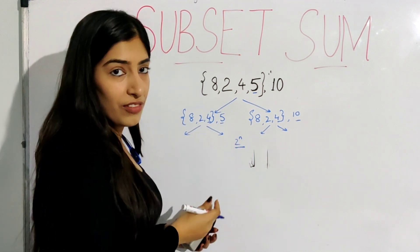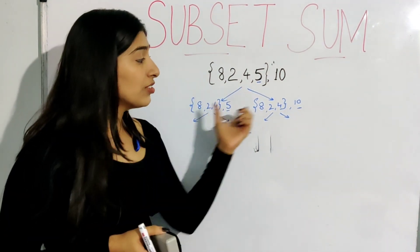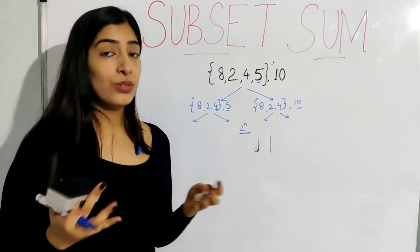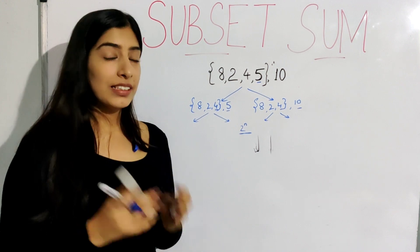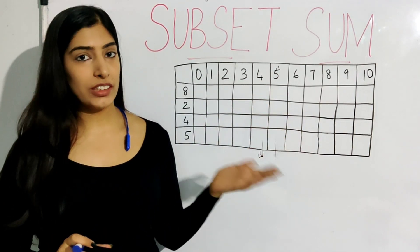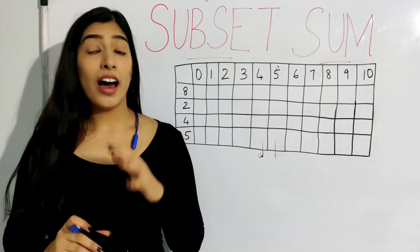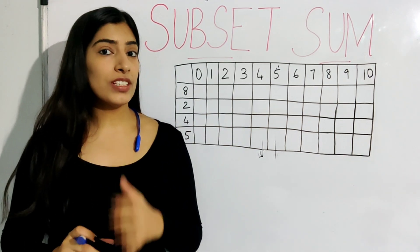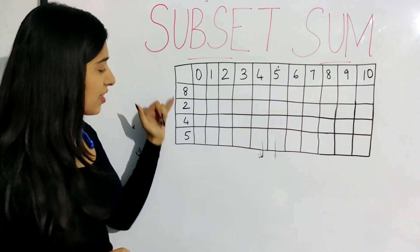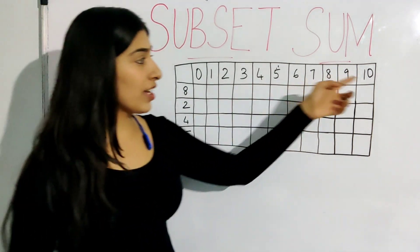This recursive approach is not efficient, so what is the better approach? As we can see, we divided the question into subproblems, so we can solve it using dynamic programming. I have formed a 2D matrix to build our DP solution. The elements given — 8, 2, 4, 5 — form the rows, and we had to find the sum 10.